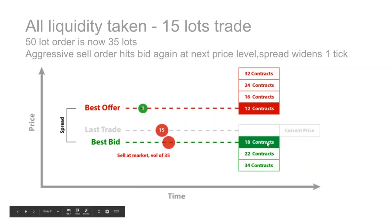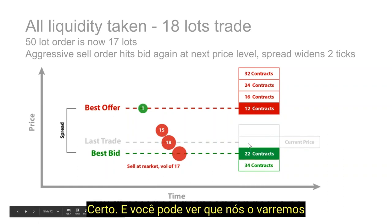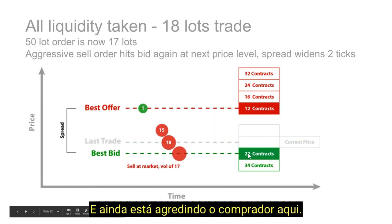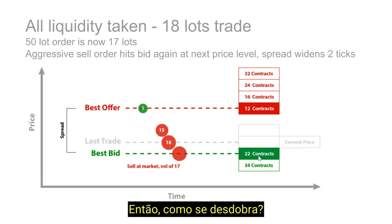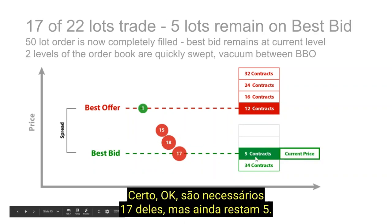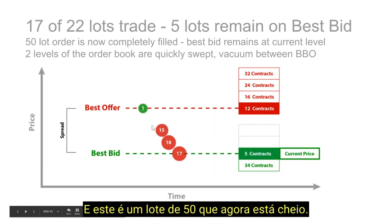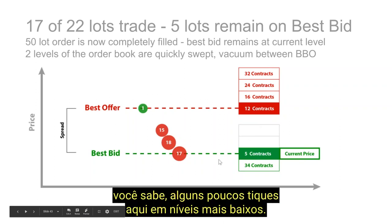Next price level — still hitting the bid, it sweeps through this price level here with 18 contracts, and now there are 17 left still remaining in that 50-lot order. It's still hitting the bid but we have 22 contracts here. It takes 17 of them, but there are still 5 remaining. That is our sweep of the book — the 50-lot is now filled. You can see we swept down a few ticks to lower levels. In thinner markets you'll see this a lot more often than in the ES. You can see the spread has widened out here — they swept through all these levels, but the best offer is still up at this level with these 12 contracts, creating a vacuum with a bigger spread.